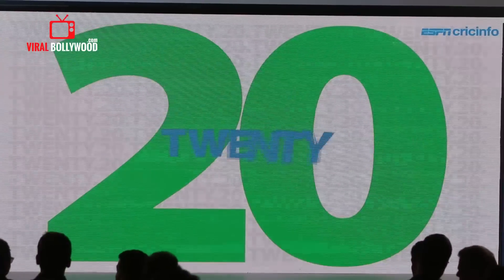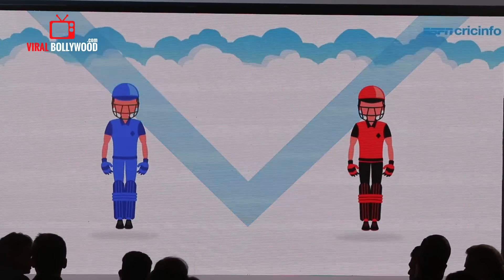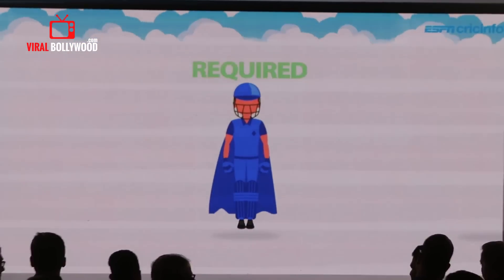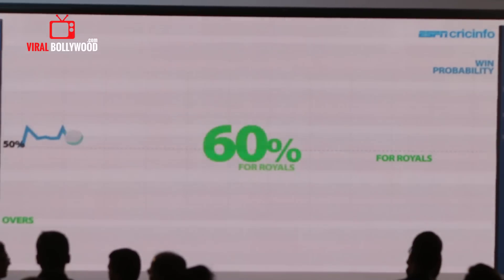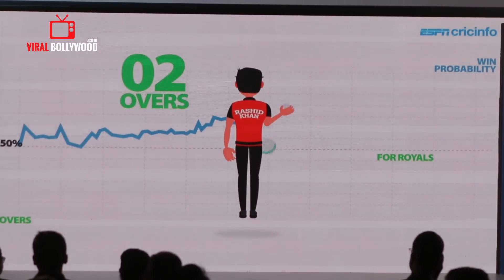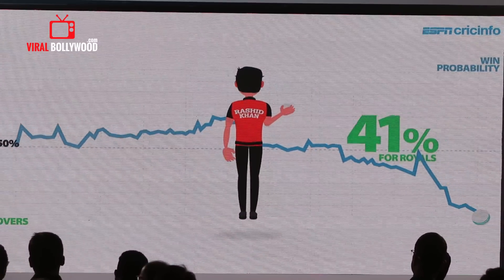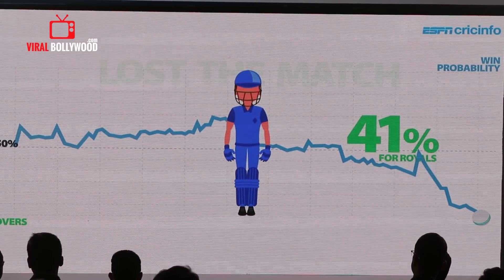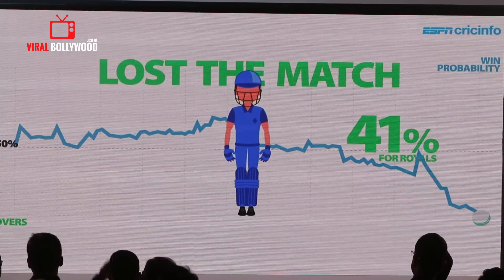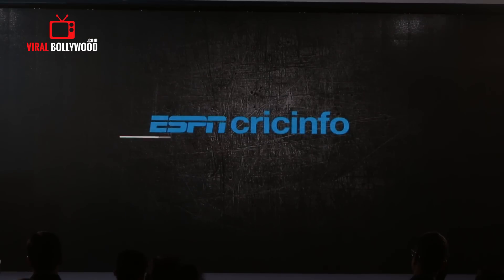Let's consider the Rajasthan Royals versus Sunrisers Hyderabad match from IPL 2018. The Royals seemed to be in a comfortable position requiring 50 runs from 30 balls. Statistically, teams have won 60 percent of such matches in the IPL, but considering Rashid Khan had two overs left, the Forecaster gave only a 41 percent win probability for the Royals. As predicted, the Royals managed to score just 38 runs and lost the match.